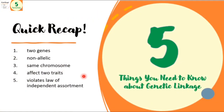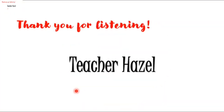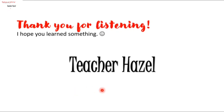Let's have a quick recap before I end this video. The five things you need to know about genetic linkage are: there are two genes, they are non-allelic, they are present in the same chromosome, they affect two different traits, and as a result, they violate the law of independent assortment. So that's all for this video. I am your teacher Hazel. Thank you very much for listening and I hope you learned something.